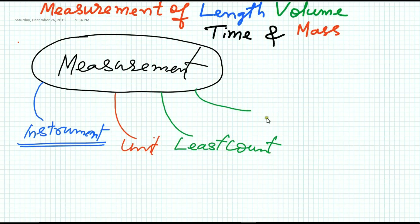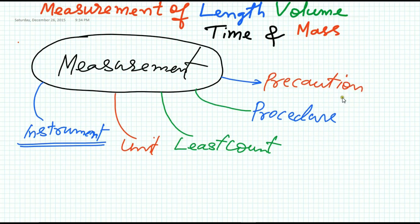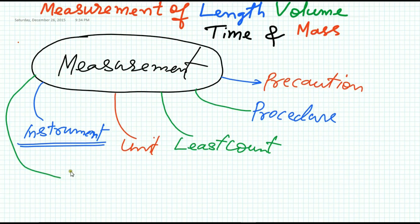The next thing you have to learn well is the procedure — what is the procedure for measuring that physical quantity. After that, we must know the precautions we have to be careful about while doing measurement. And the last important thing is the limitation of the instrument — every instrument has a limitation.